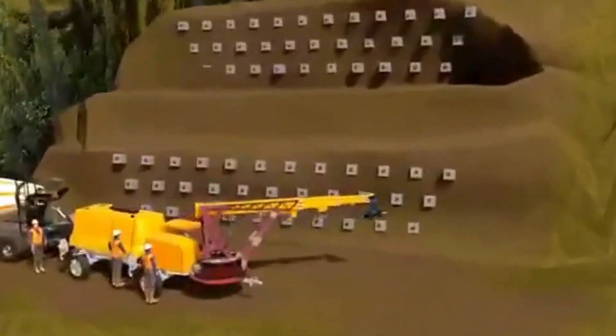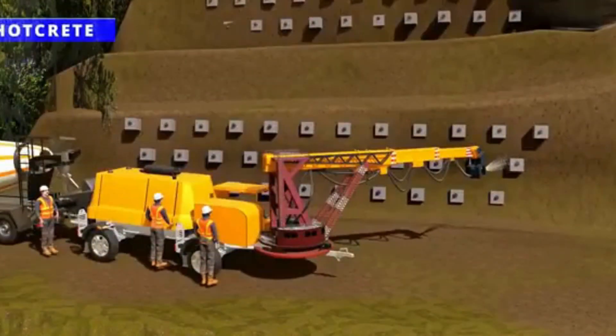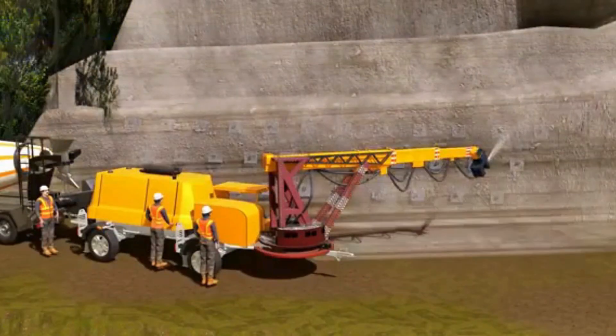Their next technique is shotcrete. Using this special machine, concrete is sprayed on the mountain rocks. This technique increases the stability of the mountain further.